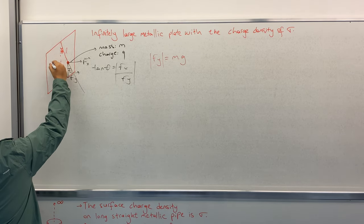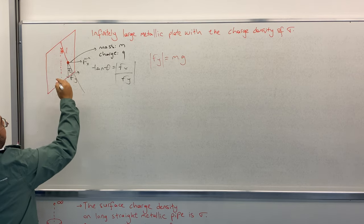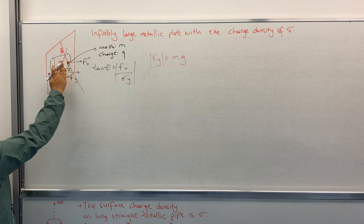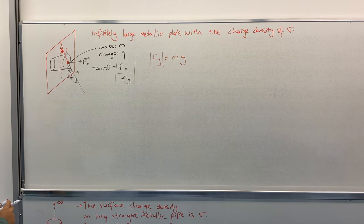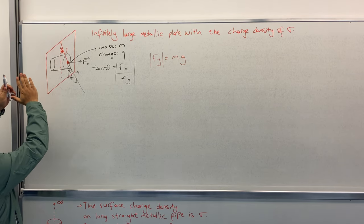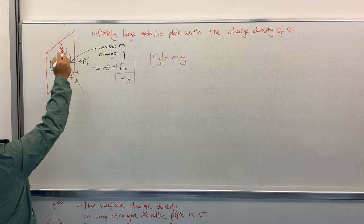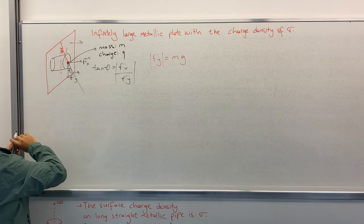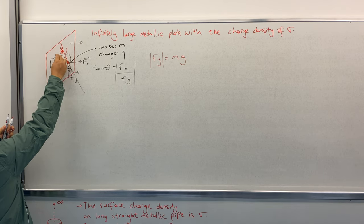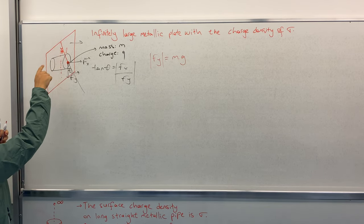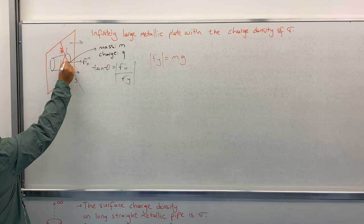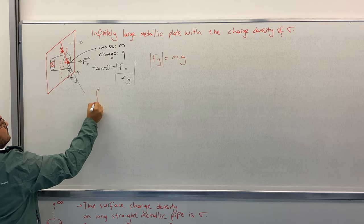So calculating Fy is really easy. The magnitude of Fy equals to m times g. In order to calculate Fx, we need to know the electric field at that point, so we will also again use Gauss's law. This time, we will draw a cylinder but let's rotate the cylinder like that, so that the point is on the top surface of the cylinder.